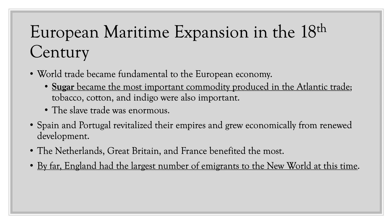Sugar became the most important commodity produced in the Atlantic trade. Tobacco, cotton, and indigo were also important, but sugar was the most popular and profitable, largely from the New World. The slave trade was enormous and connected to sugar, which was a very labor-intensive crop, so African slavery was utilized for its production. Spain and Portugal were able to revitalize their empires and grow economically with renewed development, though not at the level of the 15th and 16th centuries. Britain, France, and the Netherlands continued to remain on top economically.